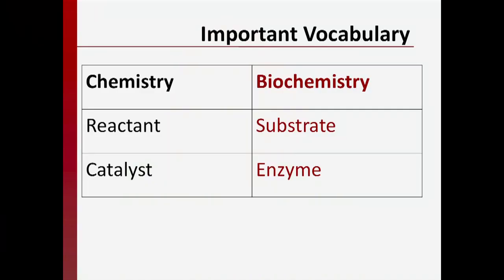First, a couple of biochemistry terms that you need to be familiar with. In biochemistry, a reactant is called a substrate. This is really just a matter of different fields using different terms, but it's important for you to be aware of this. Catalysts found in biological organisms are called enzymes. Textbooks frequently abbreviate substrate using the letter S and enzyme using the letter E.